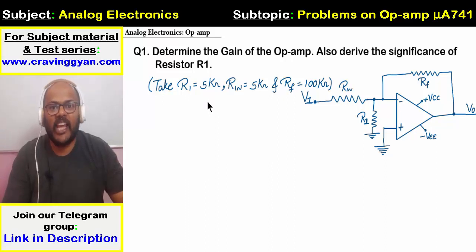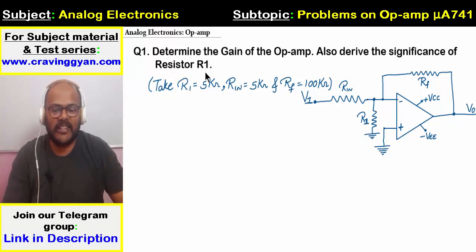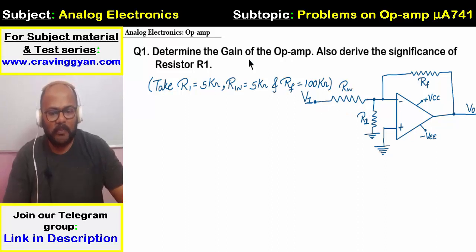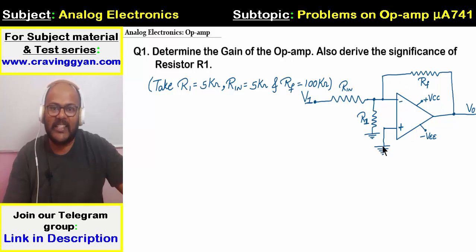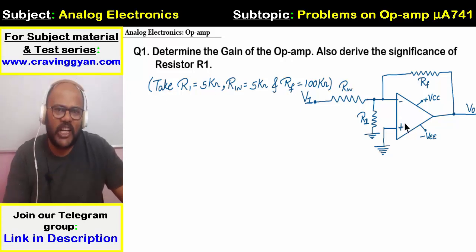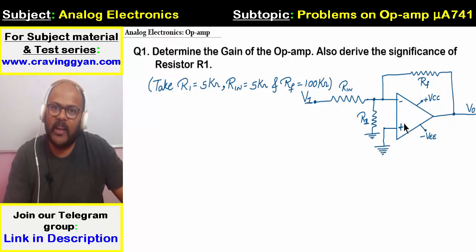The second thing they are asking is: what is the significance of resistor R1? Now look at the things — we are saying the op-amp is not in saturated mode. What do we mean by saturation? The output will be fluctuating between minus 14 volts to plus 14 volts — one volt less than the power supply — that will be your saturated voltage.